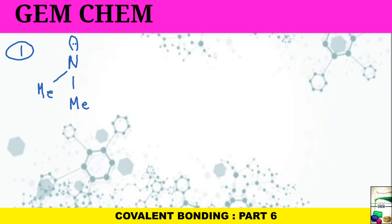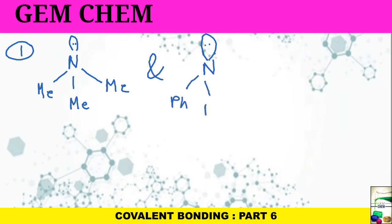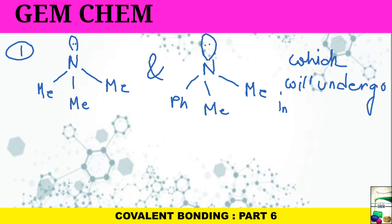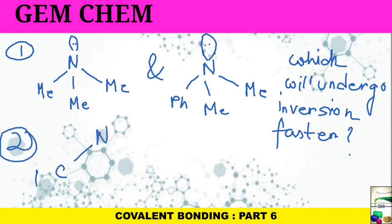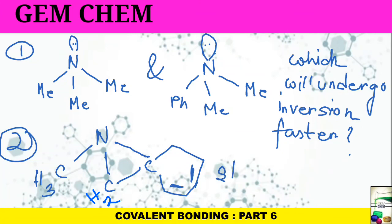Now try to answer two checkpoint questions: First, given two amine moieties with lone pairs on P, H, and methyl groups — which will undergo inversion faster? Second, why is atomic inversion much slower in a specific amine shown? Try to answer these questions. That's all for today — hope this was helpful. Thank you for watching; do not forget to like, share, subscribe, and comment.